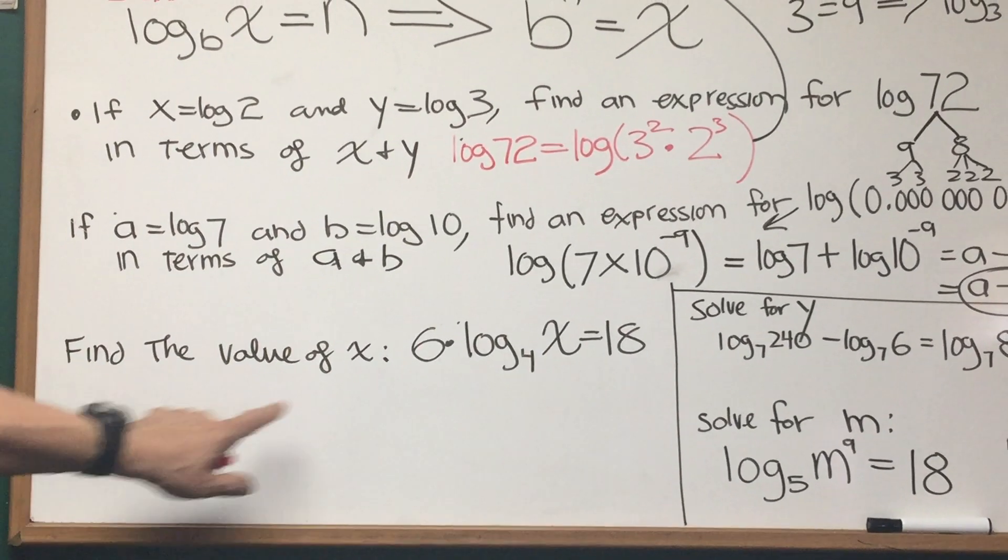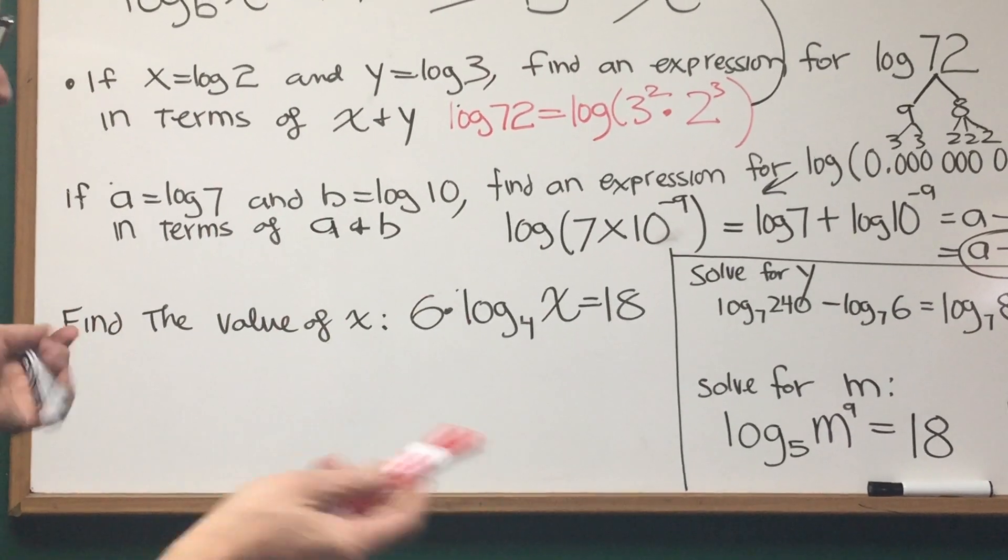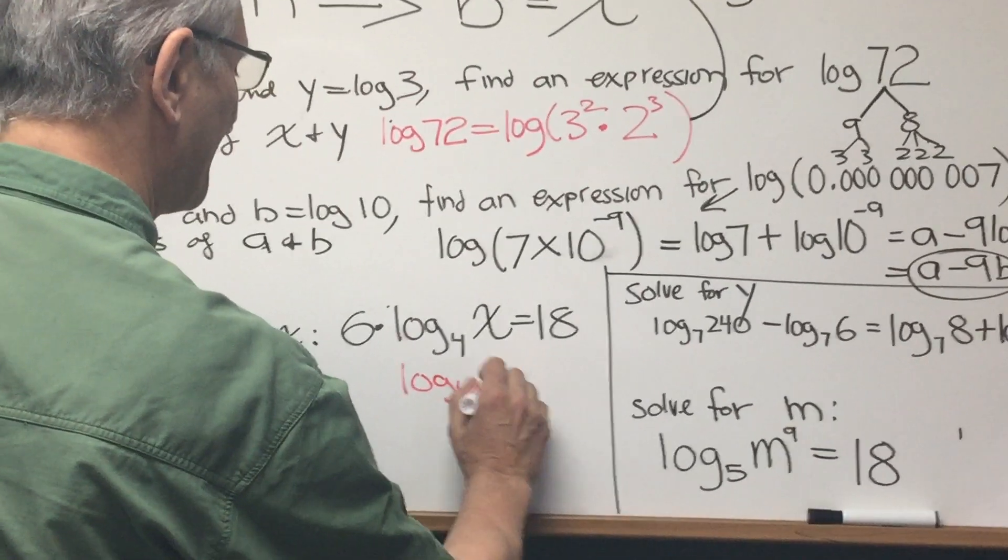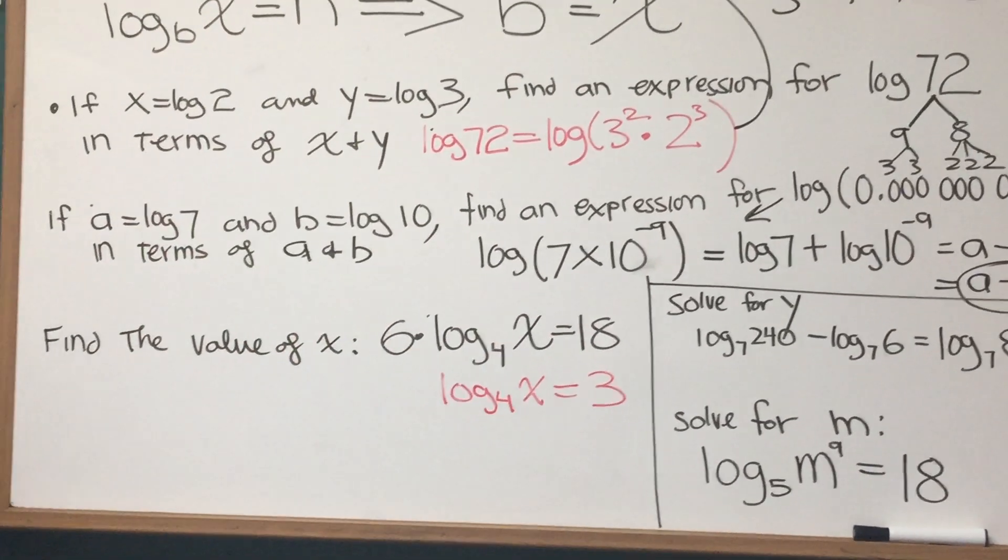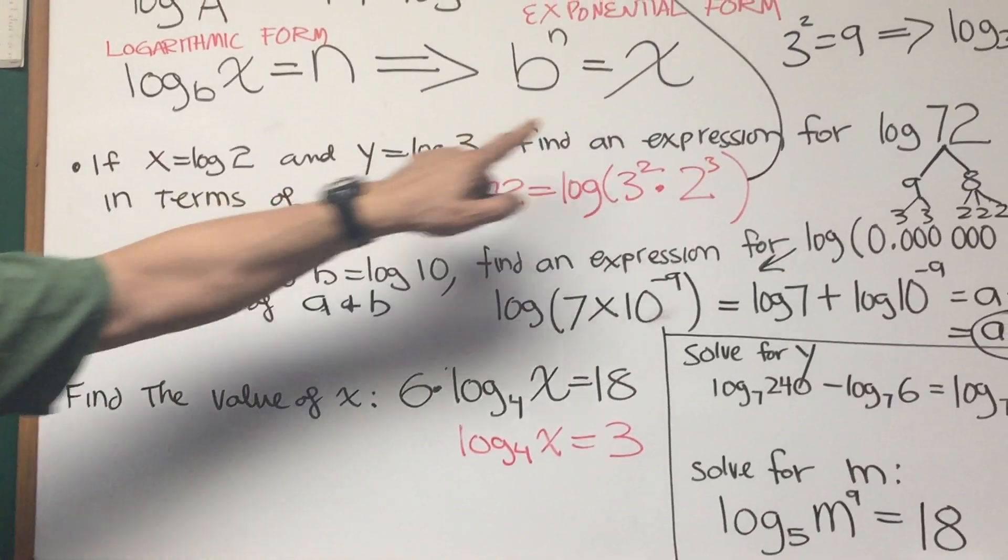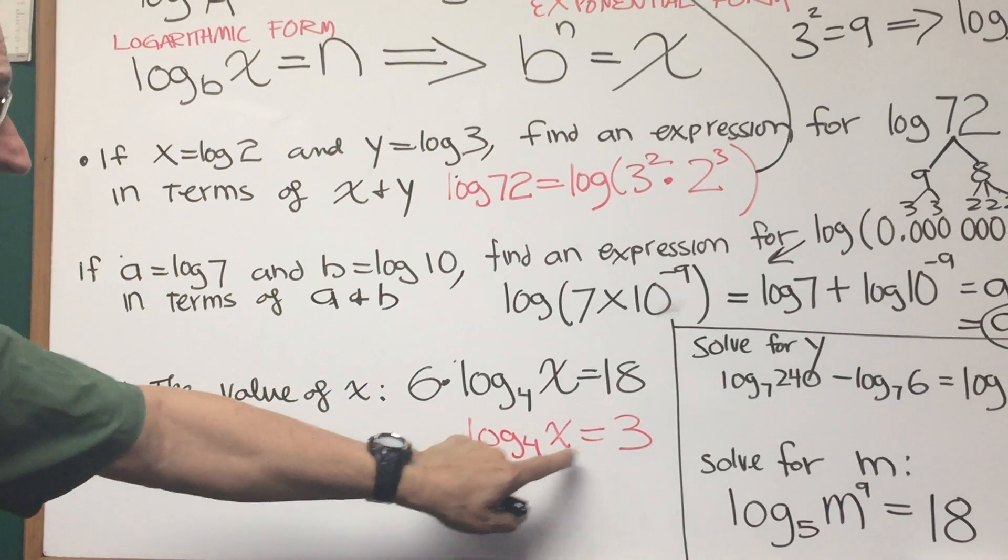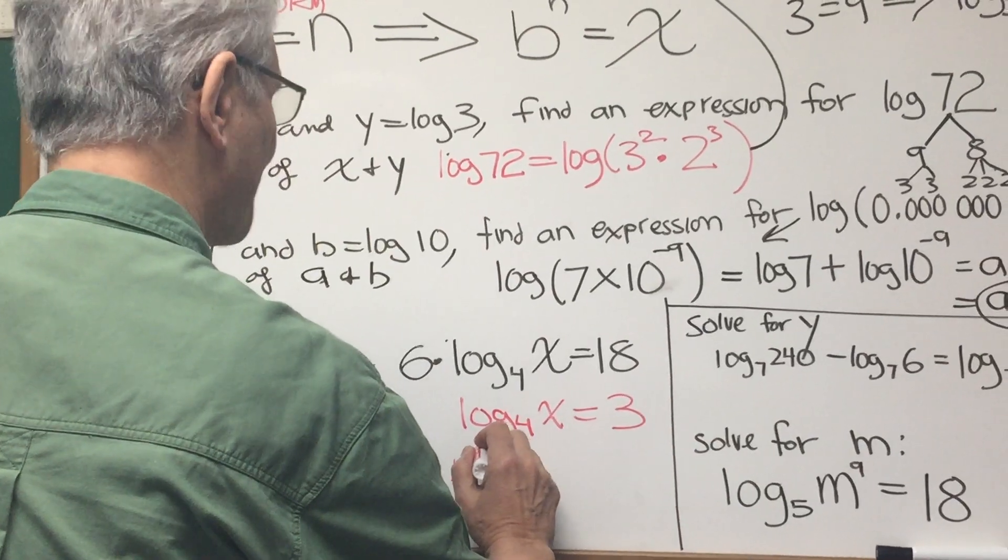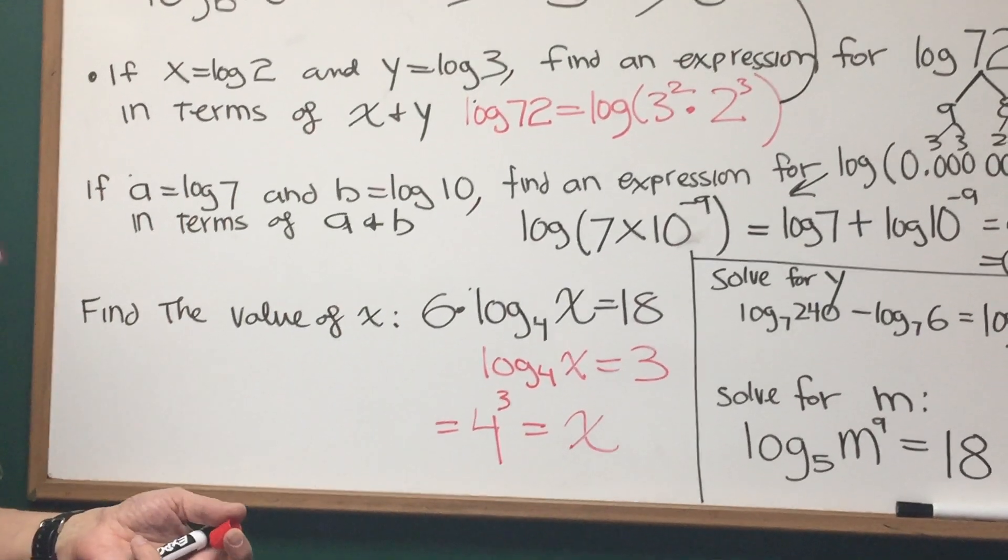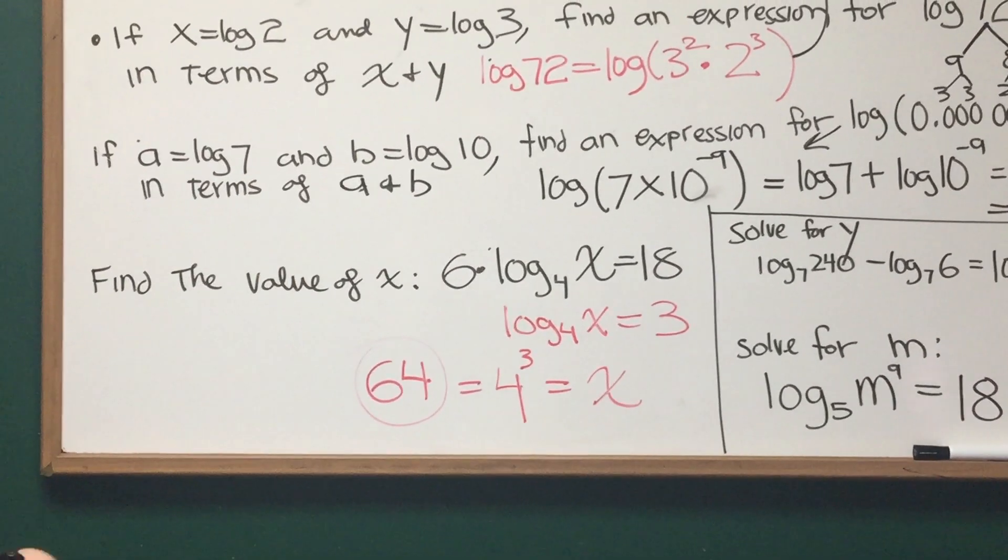Let's do this one. Find the value of x: 6 times log base 4 of x equals 18. What's the value of x going to be? Let's first simplify this by dividing both sides by 6. We'll get log base 4 of x is equal to 3. Now, how do we do this? This is going to call upon our conversion from logarithmic form to exponential form. Log base 4 of x equals 3. The base is 4, the exponent is 3, the resulting number is x. And x is 4 to the third power, 4 times 4 times 4, x is equal to 64.